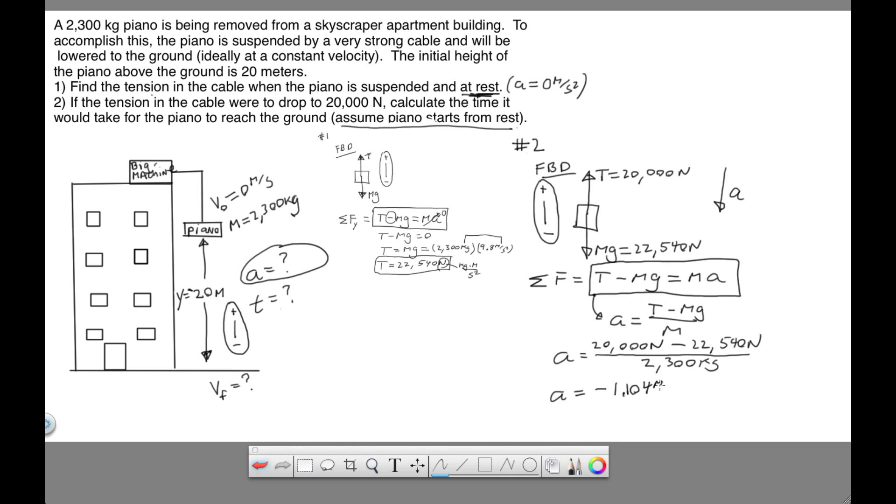1.104. So now that we have this acceleration right here, so this is 1.104 m per second squared negative. We have this value now.